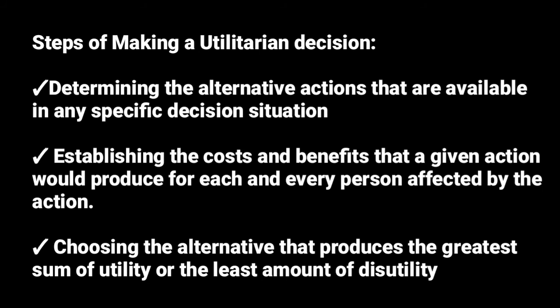And those are the three steps of making a utilitarian decision. You first determine the alternative actions, then you do the cost-benefit analysis, and after that you choose the alternative that has the greatest number of benefits, or that has more benefits compared to its costs.